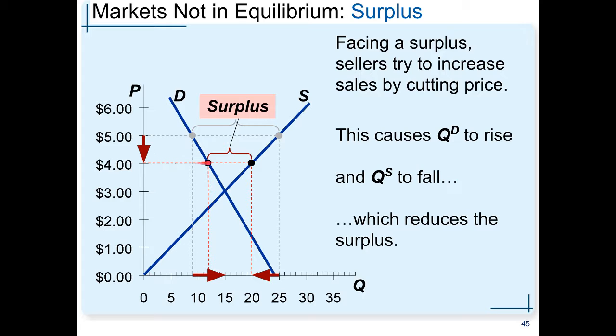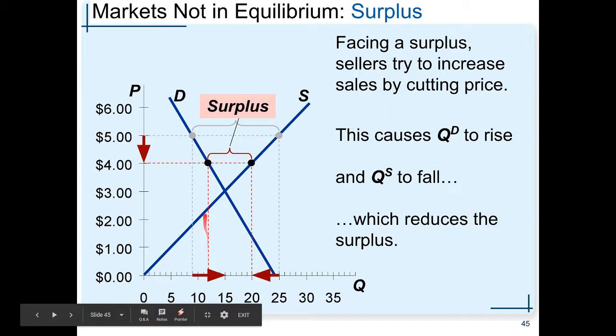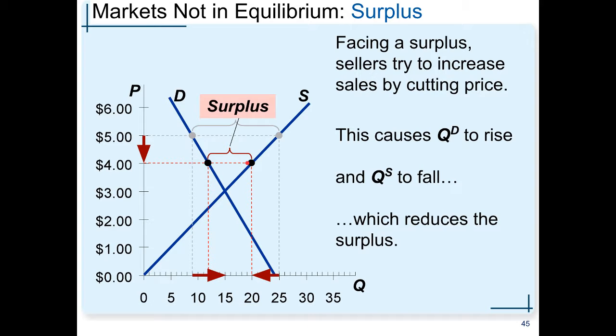At $4, still supply is equal to 20 and the consumers are only willing to buy 12. So there is still an excess supply of 8 lettuce. So farmers continue undercutting price to $3. At $3, demand is equal to supply and the farmers are able to sell all their lettuce and everyone is happy.